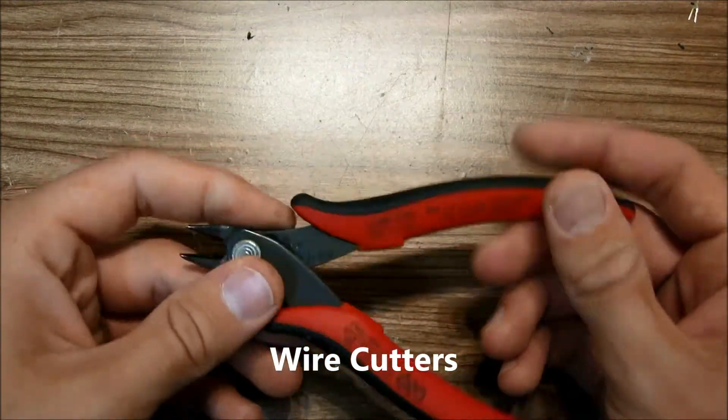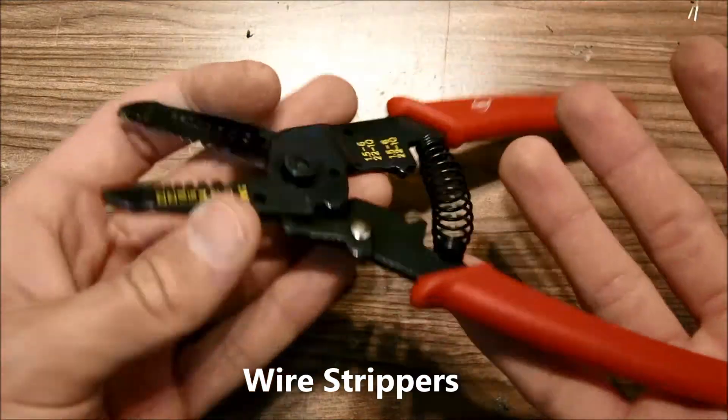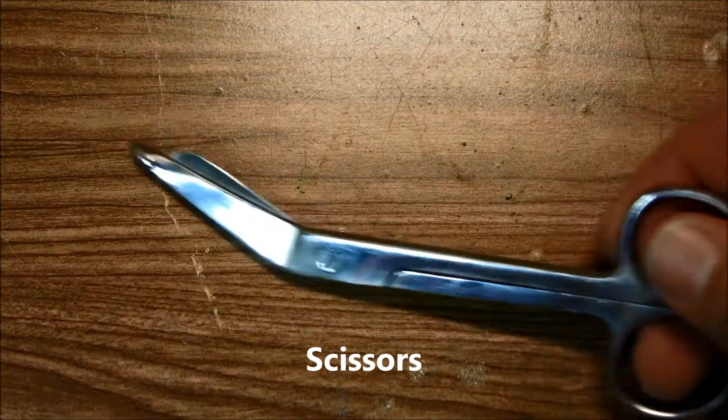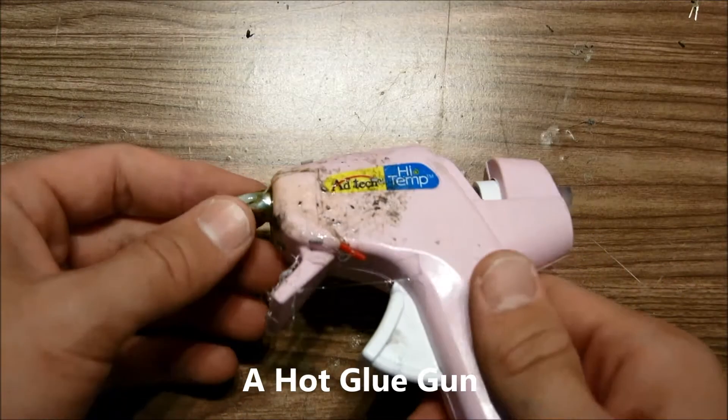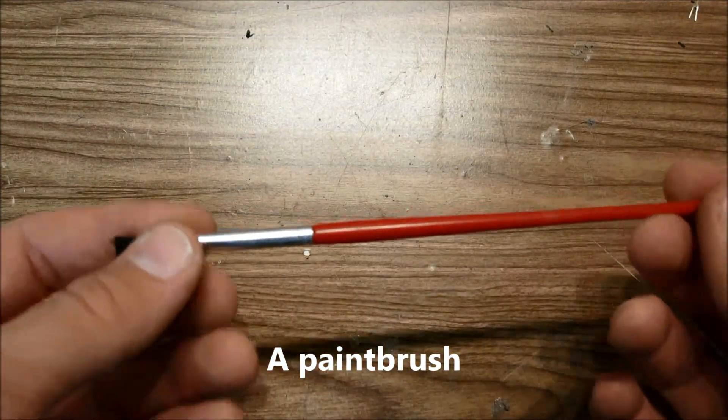You also need some wire cutters. You will also need some wire strippers like these. You will also need a pair of scissors. You will need a hot melt glue gun. And you will need a paint brush.